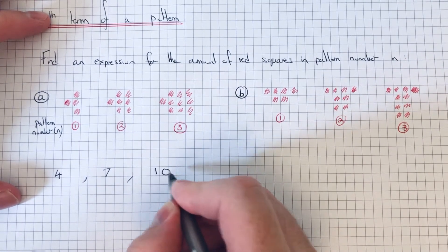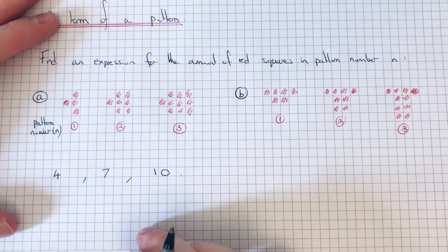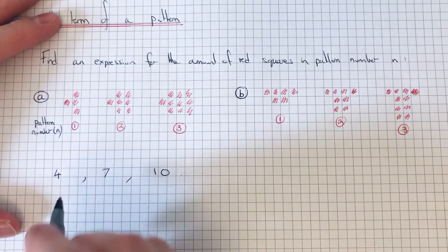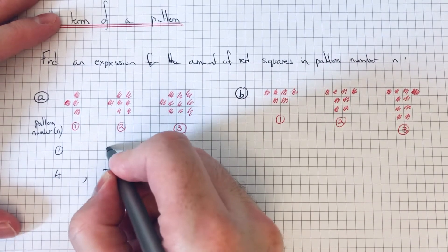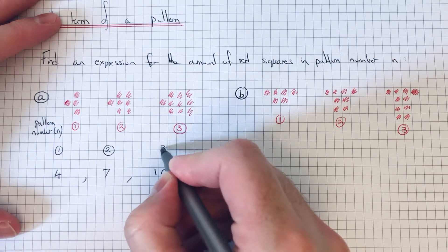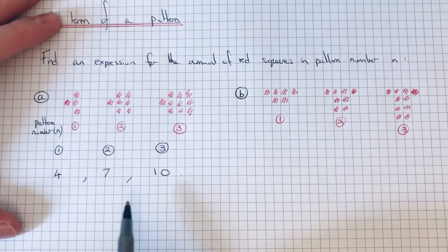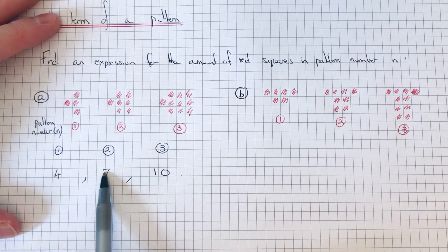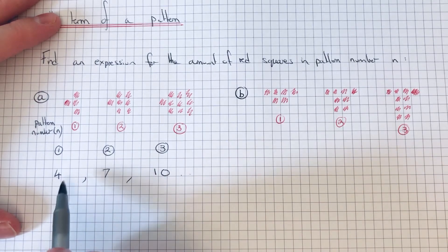This is our first term, this is our second term, this is our third term. Let's look at what the sequence is going up in. It's looking like we're adding on three each time.